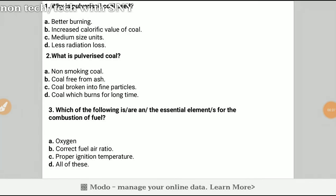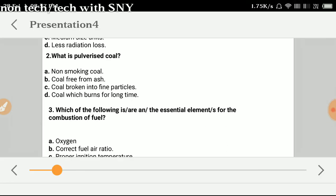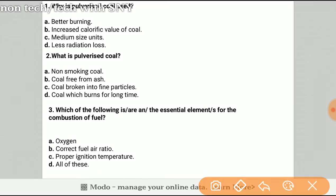Question number one: Why is pulverized coal used? The answer will be better burning, because these coals have no moisture content which is very useful in reducing electricity. The burning efficiency is more and the ash content is very less. Question number two: What is pulverized coal? The pulverized coal is coal broken into fine particles, so the answer will be C, broken into fine particles.